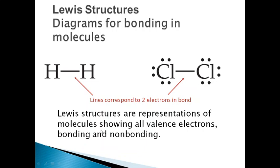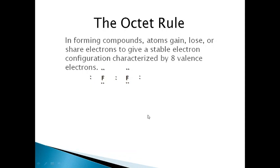Lewis structures are representations of molecules showing all valence electrons — both bonding and non-bonding. The non-bonding electrons are also shown. For example, with chlorine, only one electron participates in bonding with another atom; the remaining electrons are non-bonding. So the Lewis structure shows which electrons take part in bonding and which do not.